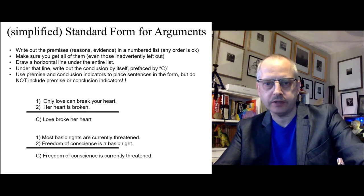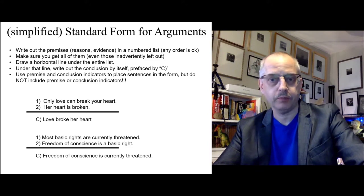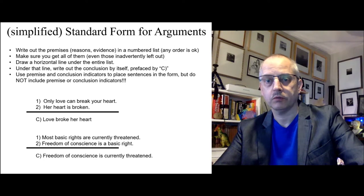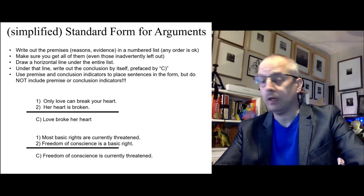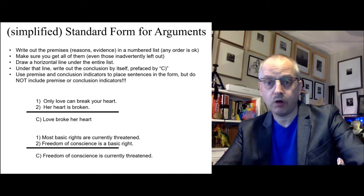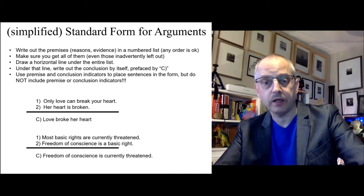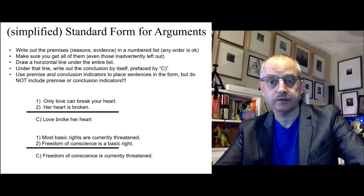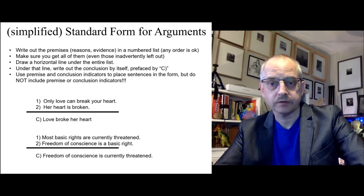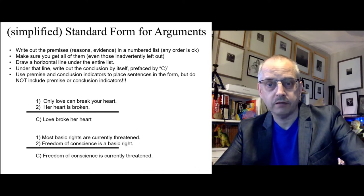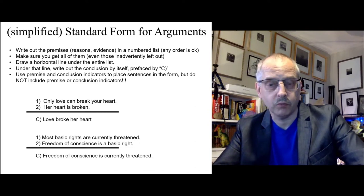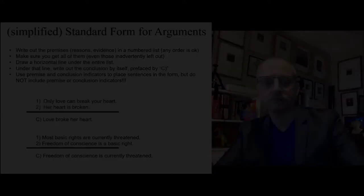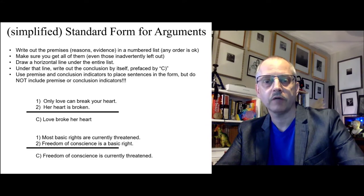What we have here is standard form in simplified form. These are the instructions you need to follow when I ask you to put an argument into standard form. You write out the premises, which are like the reasons and evidence given for a claim, in a numbered list. Then you draw a horizontal line, write down the letter C under the line, and then the conclusion of the argument. A main task we'll have in the beginning is making sure we have all the premises. When people make arguments, sometimes they leave premises out. To understand, analyze, and evaluate their arguments, we need to supply all the missing premises. You can see here two simple examples of arguments in standard form — yours should look a little bit like that, one sentence per line.